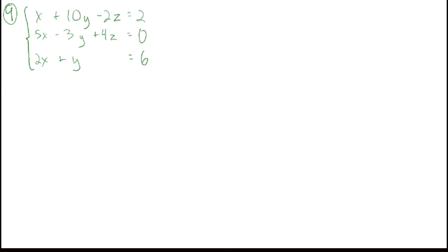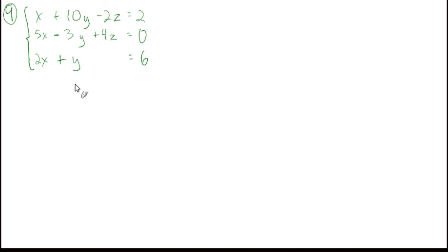Now we'll move on to number 9. We're going to actually make one of these matrices and you'll start to see why we want to use them. It's a system of equations, and they say to write the augmented matrix that represents the system. Before we do that, think about what we'd do to solve this system — we might multiply one equation by negative 5 and add it to the second. That's a lot of writing. The goal of mathematicians is to use as little ink as possible, so instead of writing all the x's, y's, z's, and equal signs, let's put everything into a little box called a matrix.